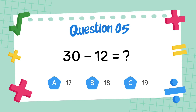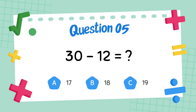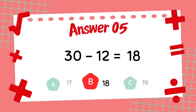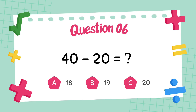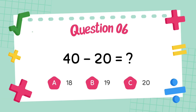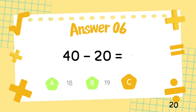What is 30 minus 12? The answer is 18. What is 40 minus 20? The answer is 20.